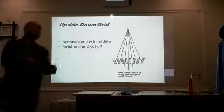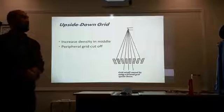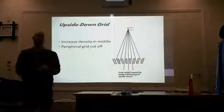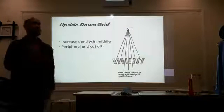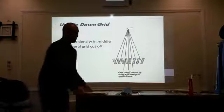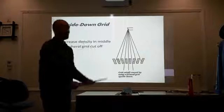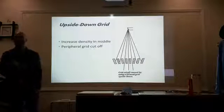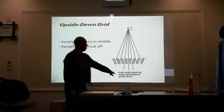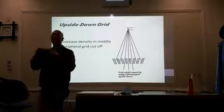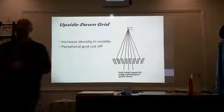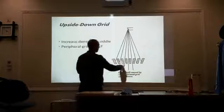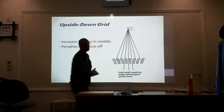Upside-down grid. You're working so fast, you just had a bad day at work, you're not thinking straight, you haven't had lunch yet. You're going to shoot your portable, you put your grid underneath, but you're not paying attention whether it's upside down or right side up. Are you still going to get an image? You're still going to get an image, but you're going to have grid cut off or decrease in density on the periphery of your image. Notice that the slant is going the other way, doesn't match the divergence of the beam.